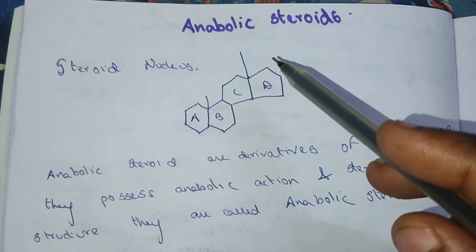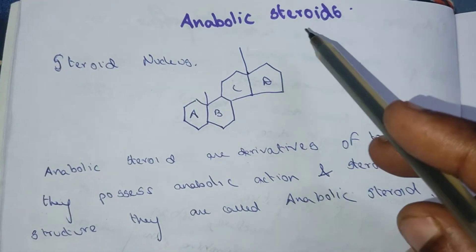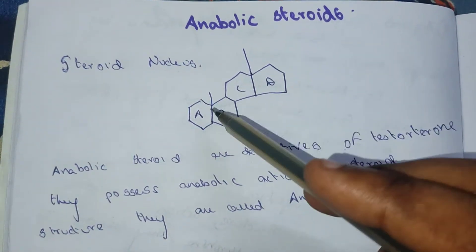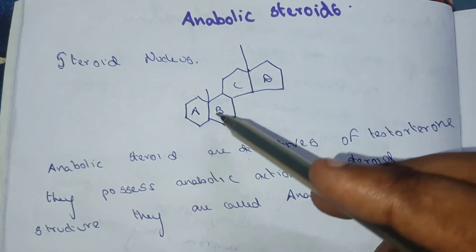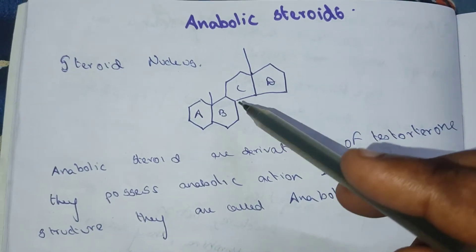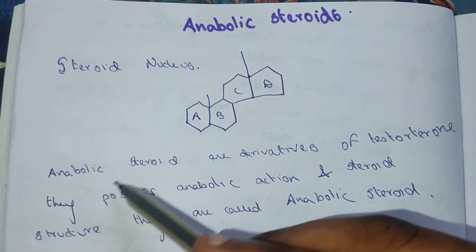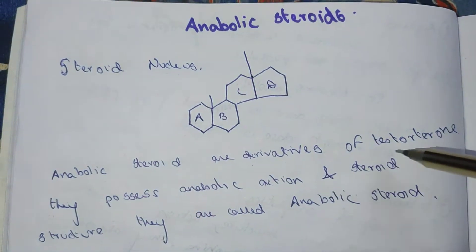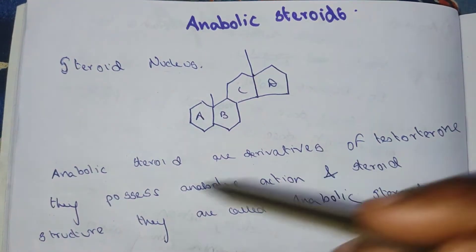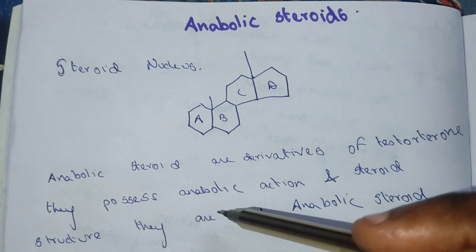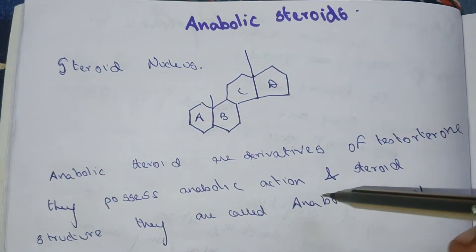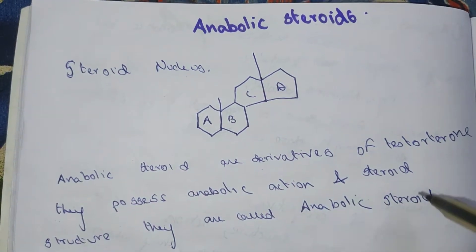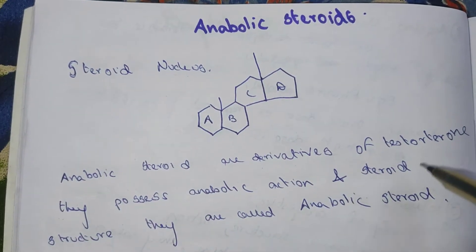Anabolic steroids have a steroid nucleus, which consists of 4 rings. Anabolic steroids are the derivatives of testosterone. They possess anabolic action and the steroid structure, which is why they are called anabolic steroids.